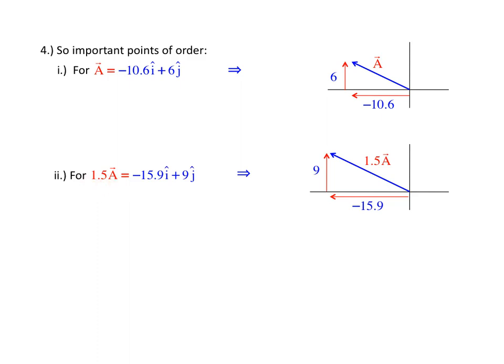For 1.5A, you basically just take each of the components and multiply by 1.5. That's going to give you minus 15.9 and 9. And here is your vector 1.5A.